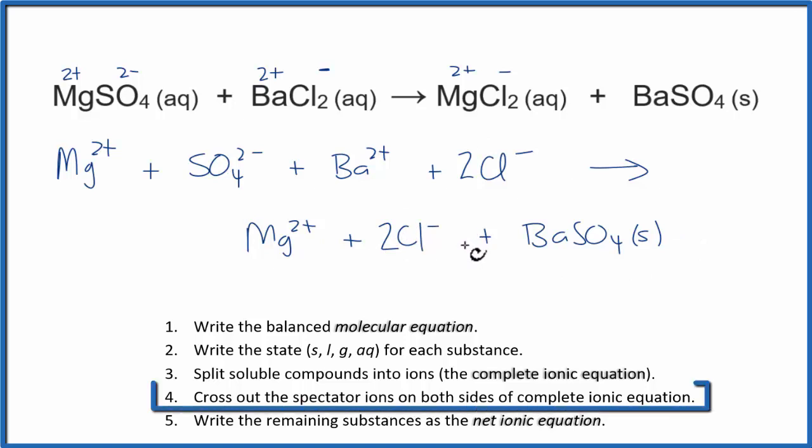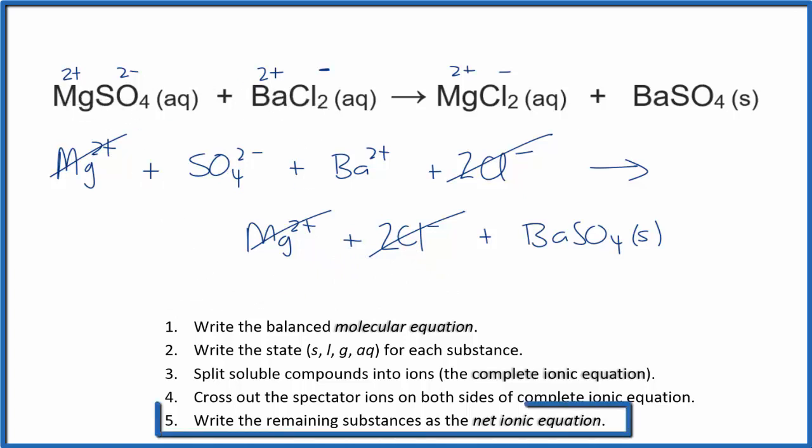We can now cross out the spectator ions, things that are the same on both sides. So we have Mg2 plus here. Cross it out. Two chloride ions. Cross them out. And everything else is different. We'll use that to write the net ionic equation for MgSO4 plus BaCl2.